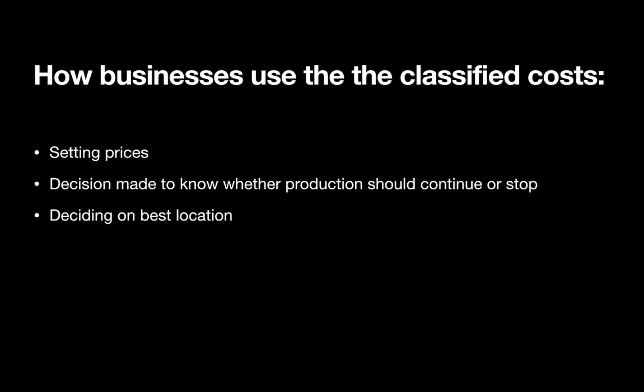For example, if a pizza costs three dollars to produce and the business needs to make a profit of two dollars, they will have to sell their pizza for five dollars — five minus three gives a profit of two dollars. The second reason to know costs is to decide whether production should continue or stop. If a product is not in demand by customers, that will increase costs for the business, and they could stop production of that product.